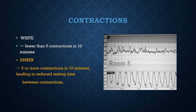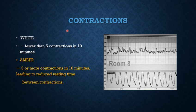Now coming to contraction. According to the new CTG guideline, CTG findings are represented by a color coding system. White means normal finding, amber means non-reassuring finding, and red means abnormal finding. In case of contraction, if the contraction is less than 5 in 10 minutes, that means it's normal or white. If it is 5 contractions or more in 10 minutes, that is called tachysystole and it's an amber finding. In this CTG we can see that there are numerous contractions, meaning there is an amber finding.